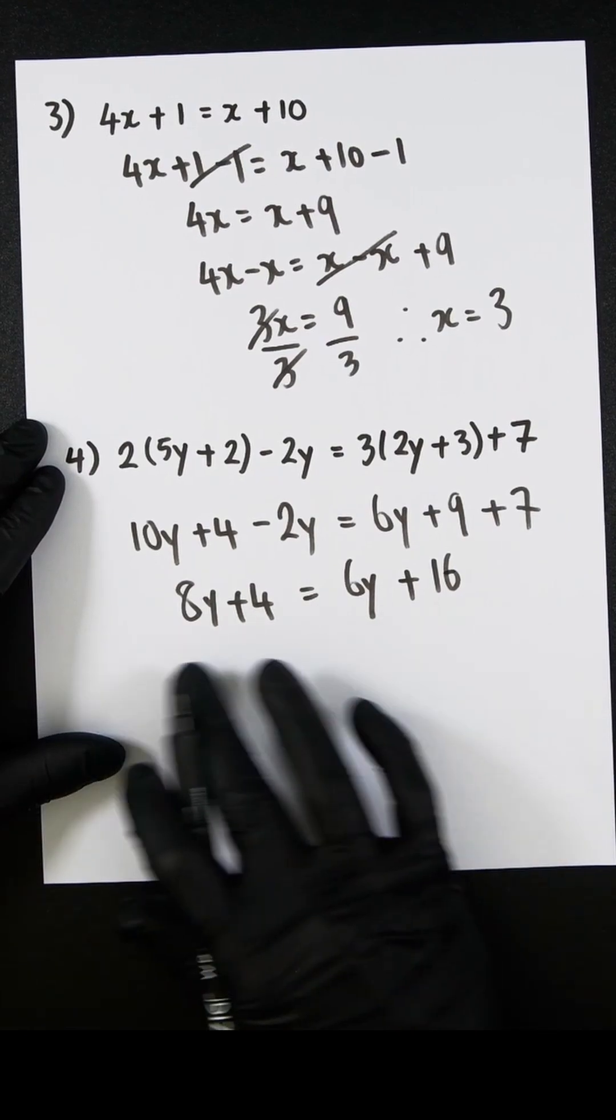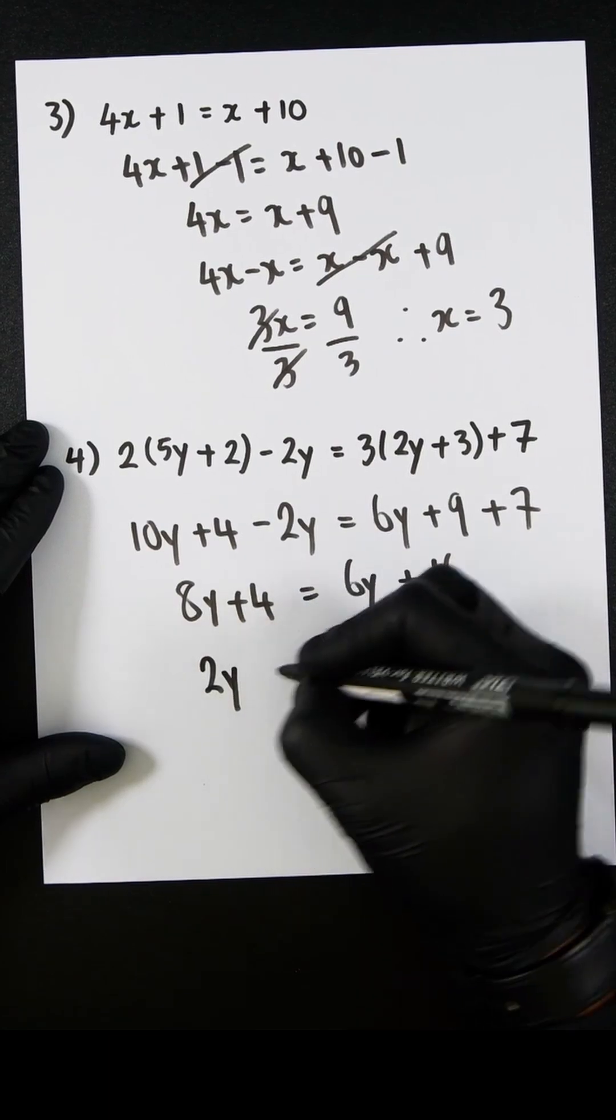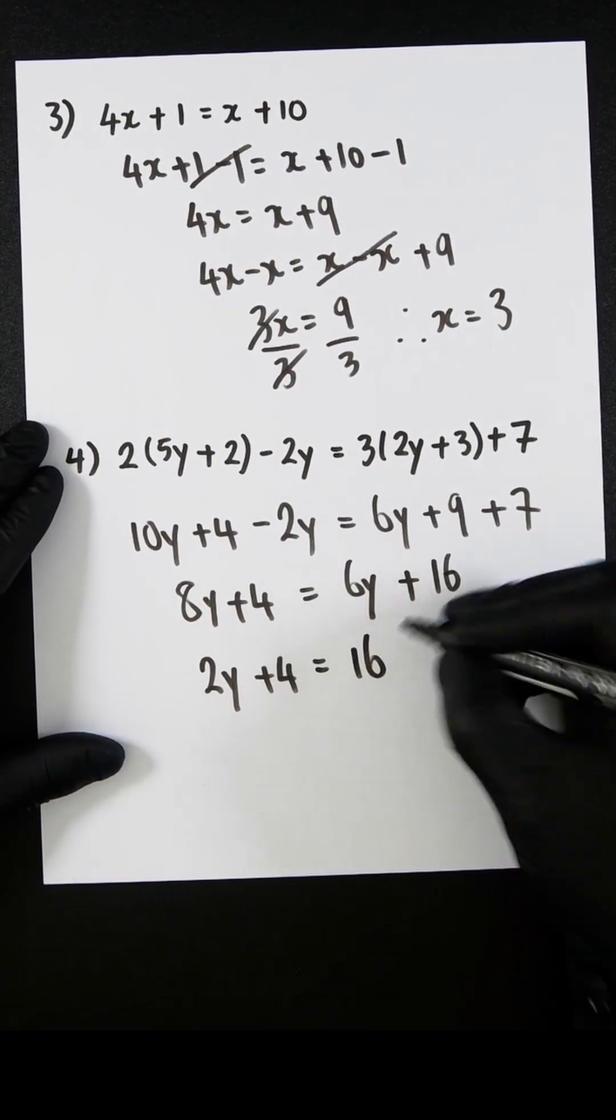Let's now subtract 6y from both sides. So 8y minus 6y is going to be 2y plus 4, which equals 16.